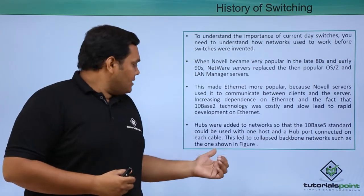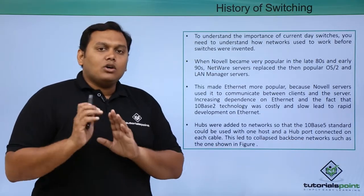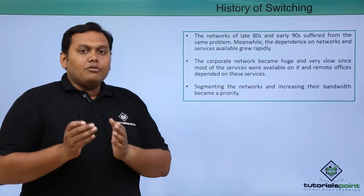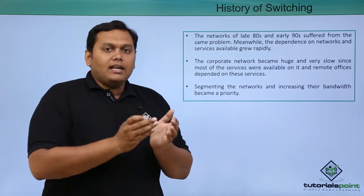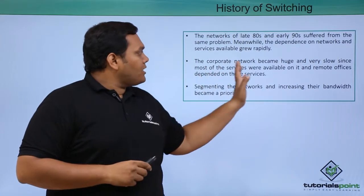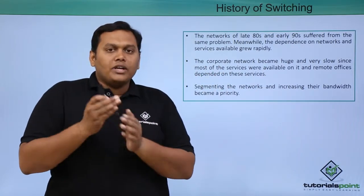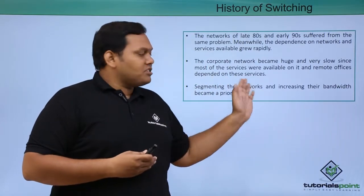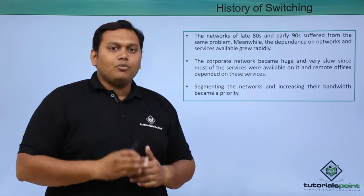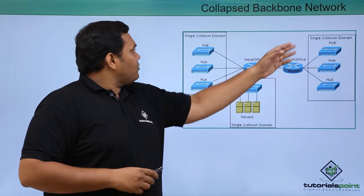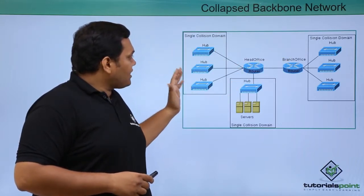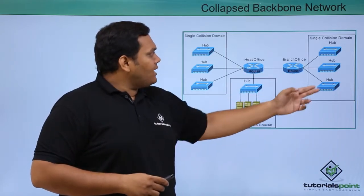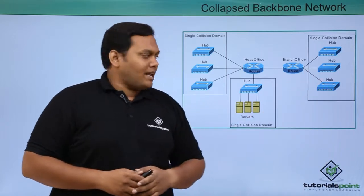The collapsed backbone network caused problems due to performance degradation, and this is where switches were introduced. The corporate network became very large and very slow in performance, and since most services were available in remote offices, dependency on those services increased. In a collapsed backbone network, all hubs are connected to one router in the head office, and the head office is connected to a branch office, with a single collision domain hub also connected to the branch office.